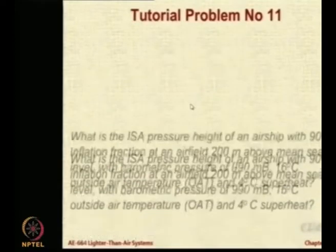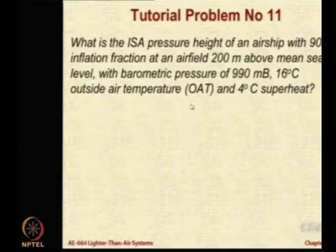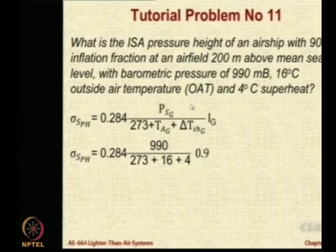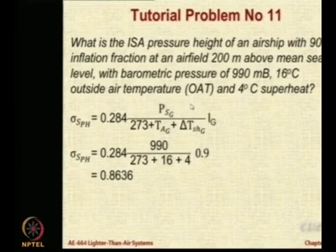So, how much is that? This is what I have got. You can cross check. So, now we have to look at the atmospheric tables and find out at what altitude is the density ratio equal to 0.8636.